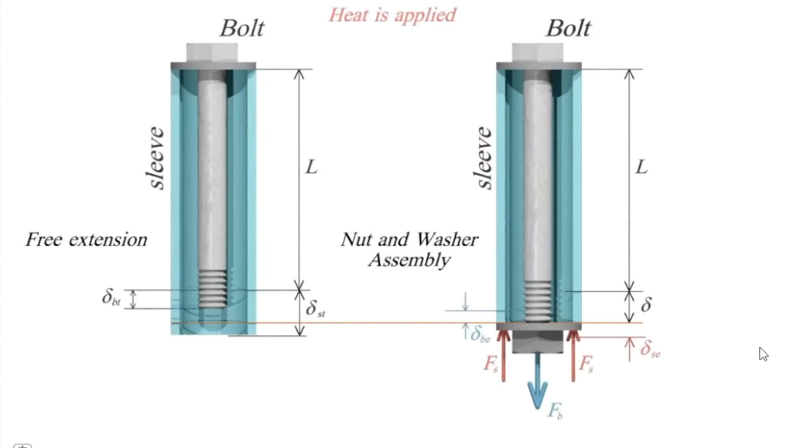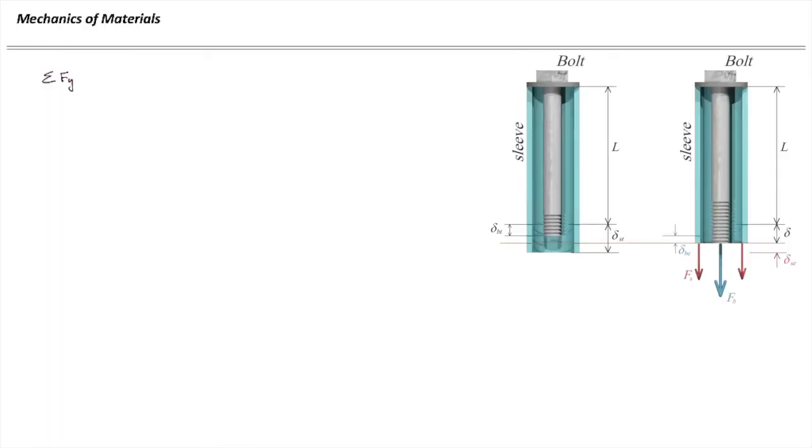So in that case, if I put that outward from the cut surface, sum of the forces in the y direction should be equal to zero. And that means that Fs plus Fb is equal to zero. As you can see, there are two unknowns in this problem and just one equation. So the problem is indeterminate. I'm going to call this equation number one.